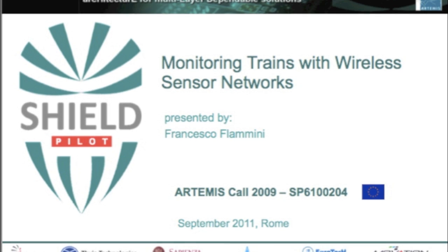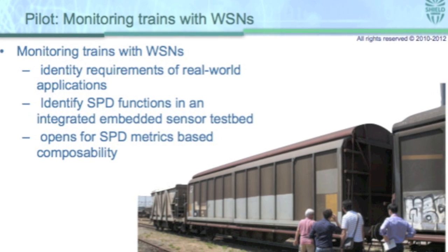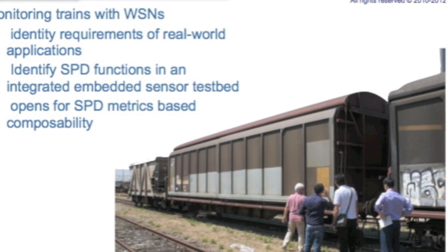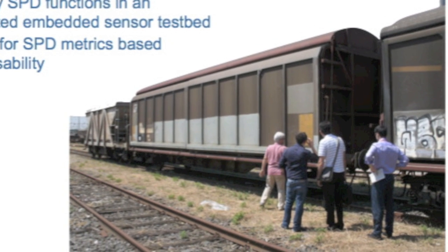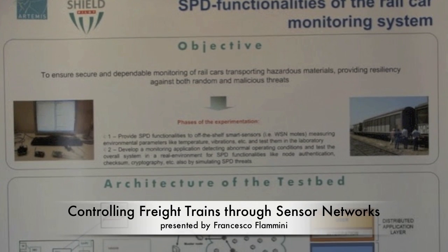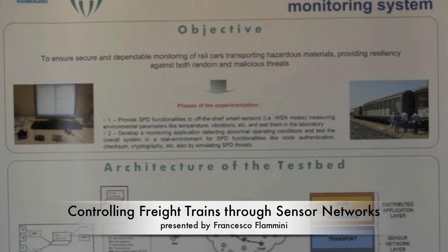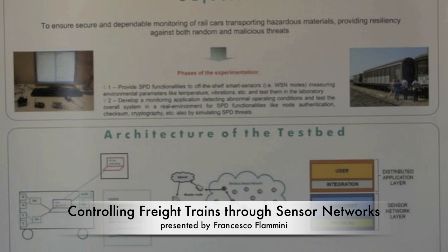PSHIELD, the pilot embedded systems architecture for multi-layer dependable solutions, is an EU Artemis project. It addresses security, privacy and dependability in the context of embedded systems as built-in functionality. This demonstration is one out of the four pilots being developed in the project.